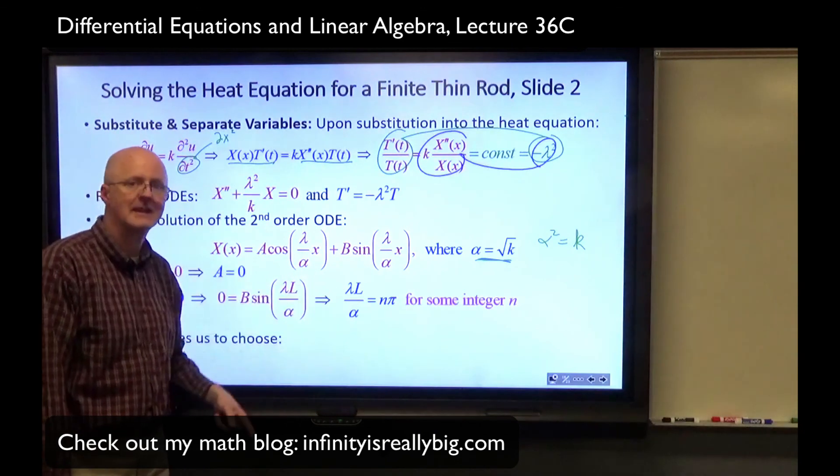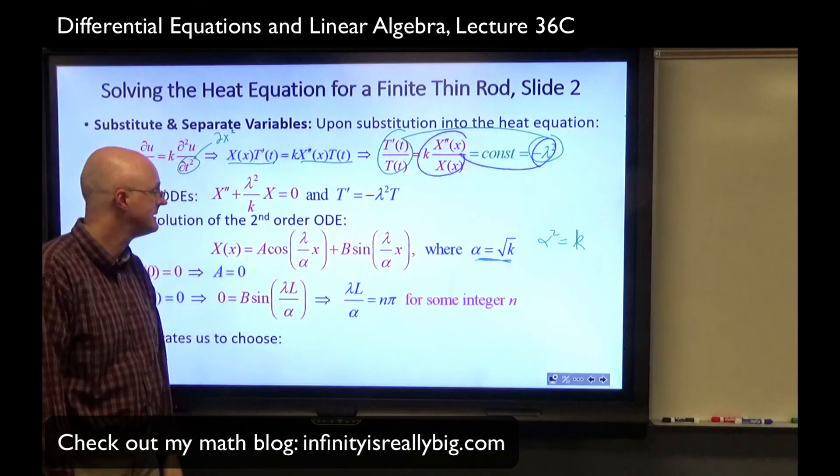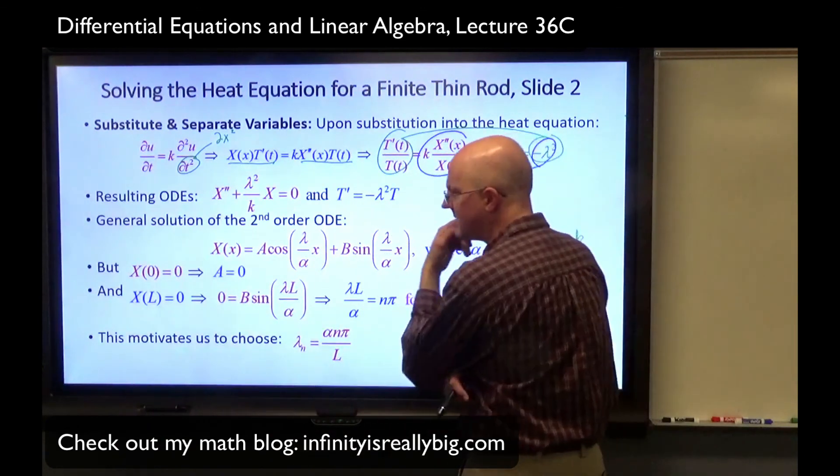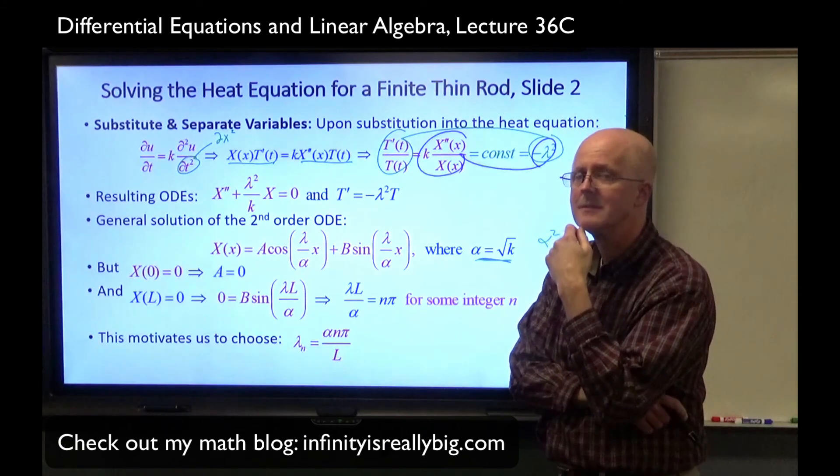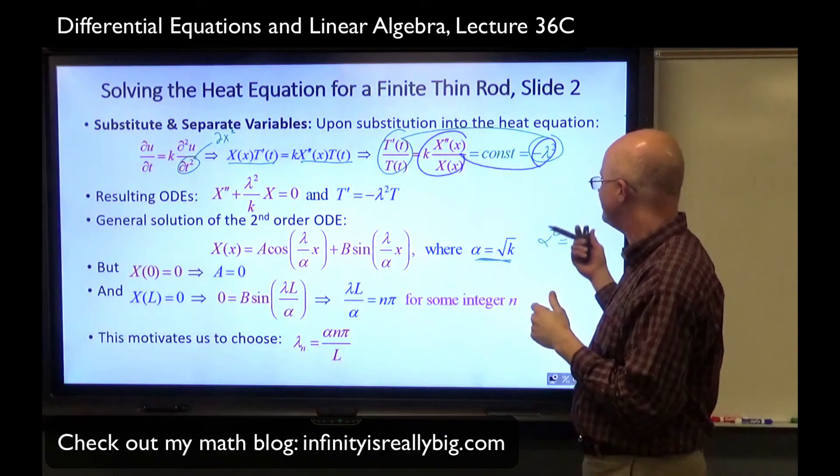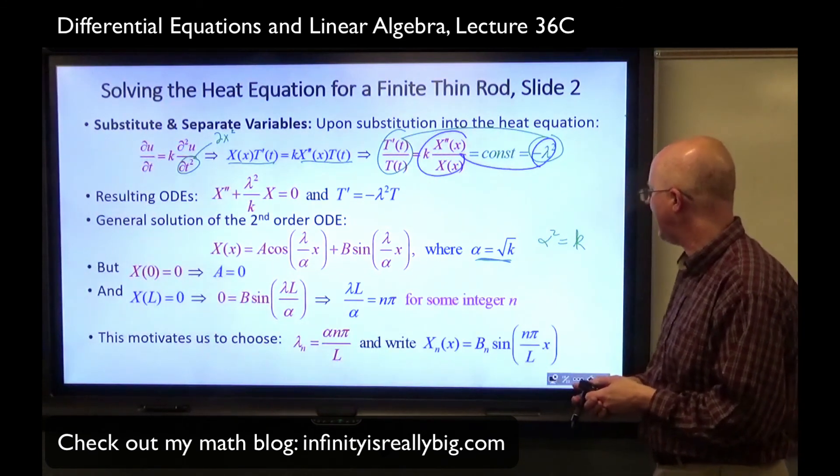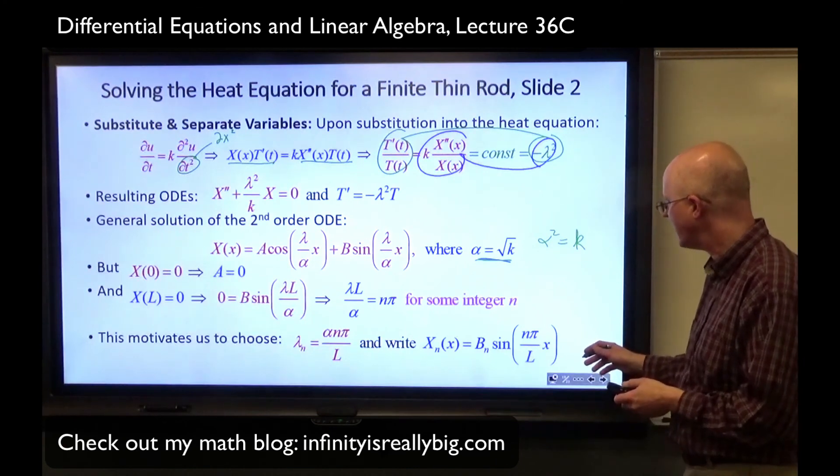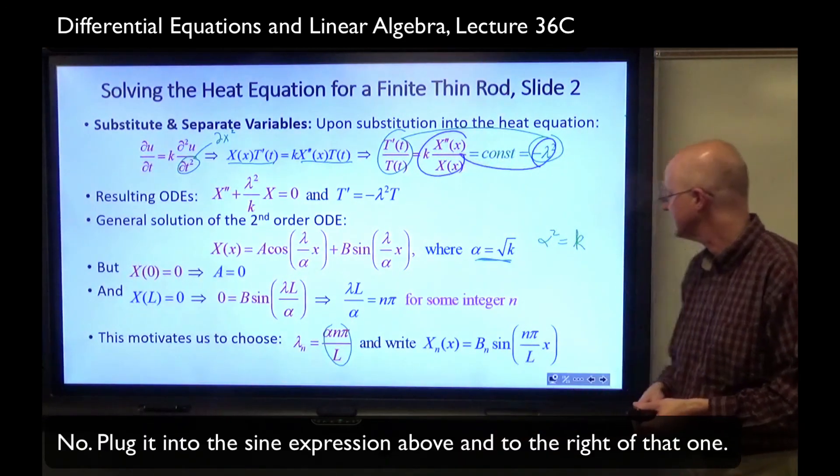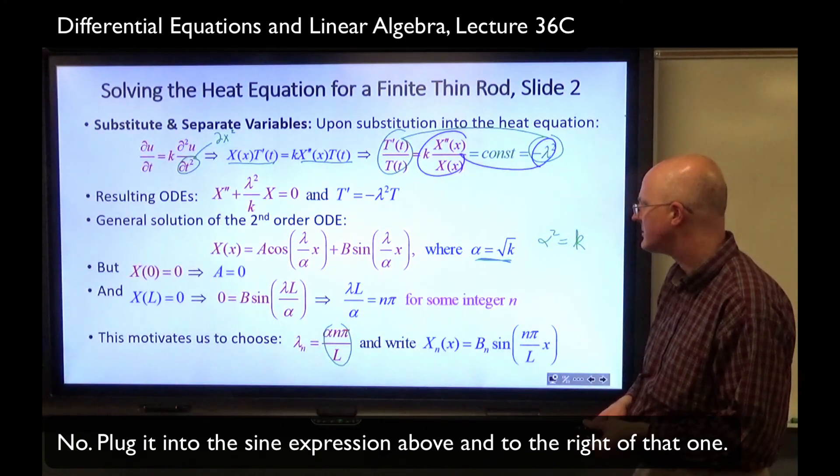And X of L equaling 0. Since A is 0, this term goes away. We can just focus on that term. Plug in x equals L. That means 0 must be B sine of lambda L over alpha. Now, that'll work if B is 0. But if B is 0, then we've done nothing. So assume B is non-zero. This input to the sine function to make this equal to 0 must be an integer multiple of pi. n times pi for some integer n. Lambda L over alpha must be n pi for some integer n. This motivates us to choose the lambdas to be n pi alpha over L. And that would be true for any n. So maybe I should call these lambda_n's.